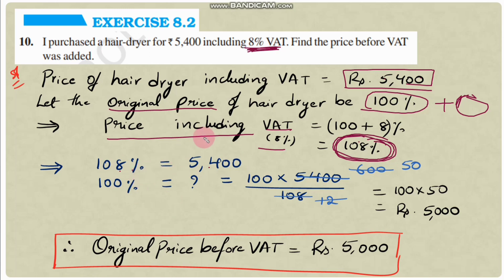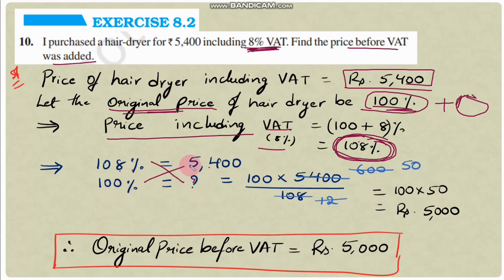We need to find the price before VAT was added, which is the original price — that is 100%. So if 108% = ₹5400, then 100% = ? Using cross multiplication: 100 × 5400 / 108.